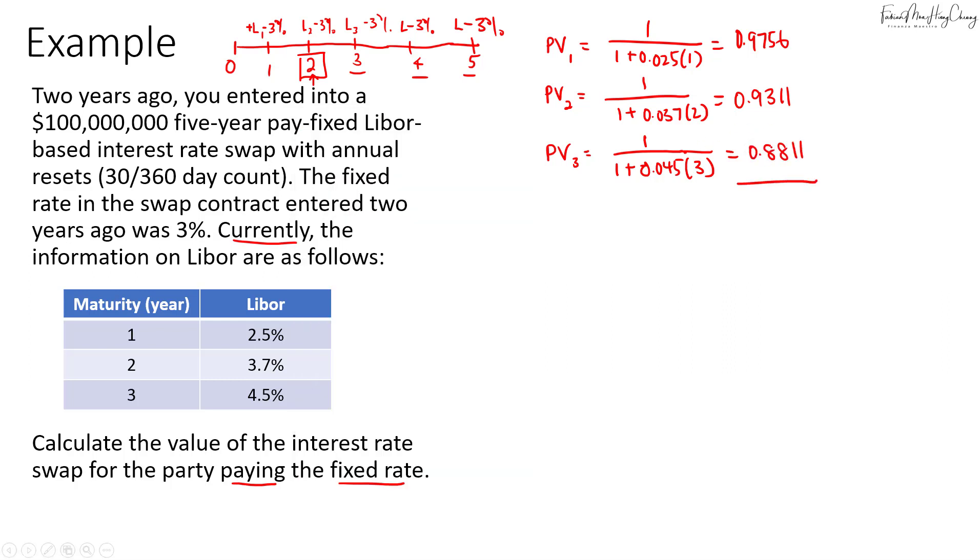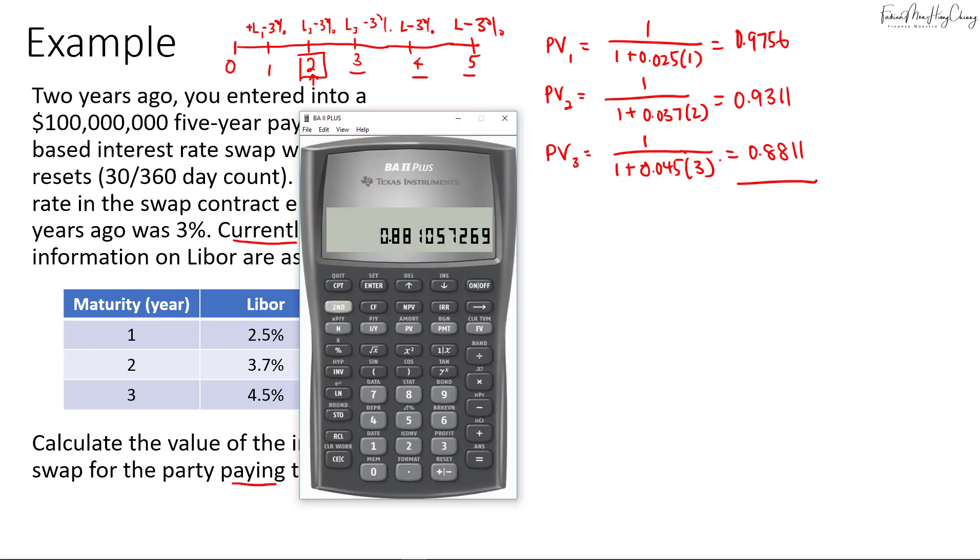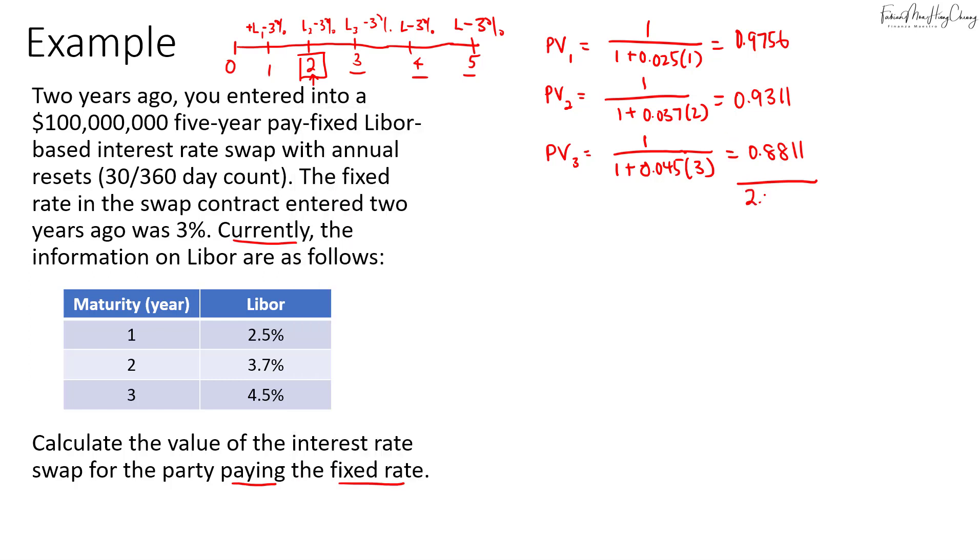So now what we need to do is we need to sum all this up. So I will just take recall 1 plus recall 2 plus recall 3, and then that's equals to 2.7878. So we'll save that in number 4. So that's 2.7878. So this is our total PV.